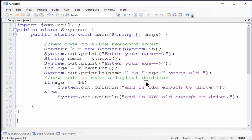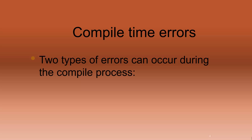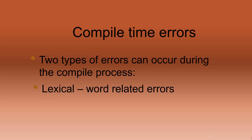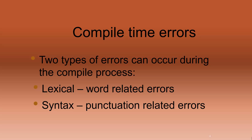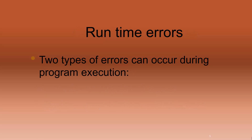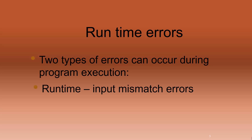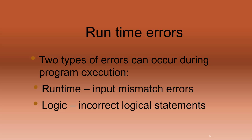Some logic errors will be easy to find, like this one, but others are going to be much more difficult, and it takes a lot of practice to find them. So in summary, we've talked about four different types of errors that you can encounter in a typical program, regardless of the language. You're going to have word-related errors, which are called lexical errors, and punctuation-based errors, which are called syntax. Both of those happen during the compile process. And then during the runtime process, you'll have runtime errors where something breaks the program, or you simply have logic errors where the program runs just fine but it's still not right.